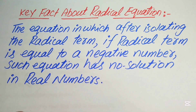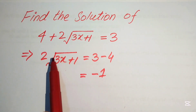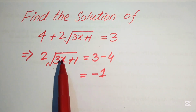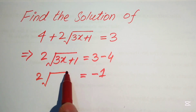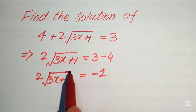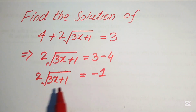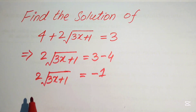According to this key fact, when we isolate the radical term it equals a negative value. So this — 2 into square root of 3x plus 1 — means that this equation does not have a solution. But for your satisfaction, I can solve this problem further and at the end you will clearly see that this equation has no solution.